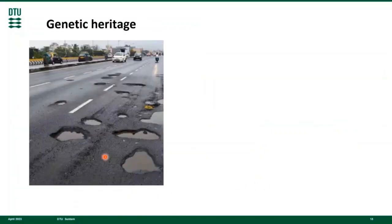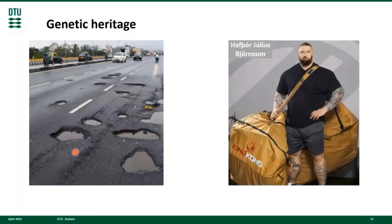The asphalt road you can see here was badly constructed, leading to fast deterioration and poor performance. One can say that it has bad genes, which are known to increase the tendency for certain illnesses. On the other hand, having good genes decreases the tendency for certain illnesses and offers improved potential performance.